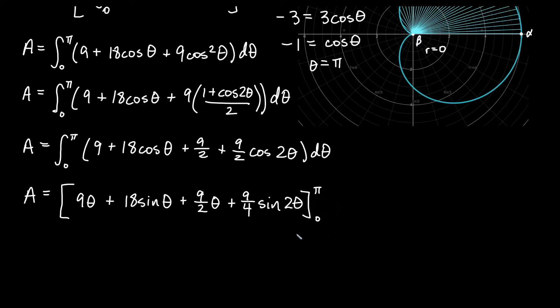Evaluating from 0 to pi. Okay, let's go ahead and plug in. So we'll get, then plugging in pi, we'll get 9 pi plus 18 sine of pi. Sine of pi is 0, so this is 0.